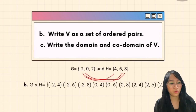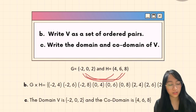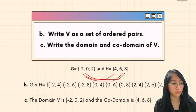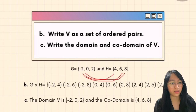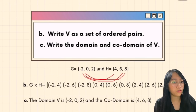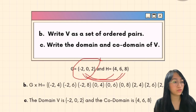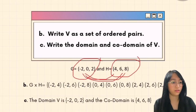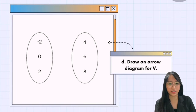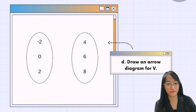For letter C — write the domain and co-domain of relation V. The domain of relation V is {-2, 0, 2} and the co-domain is {4, 6, 8}, because the x values are -2, 0, and 2, and the y values are 4, 6, and 8.